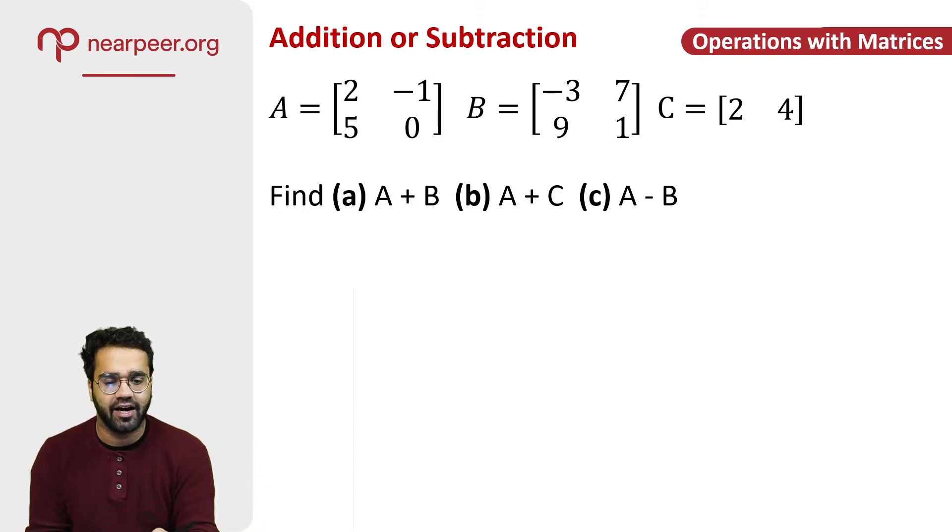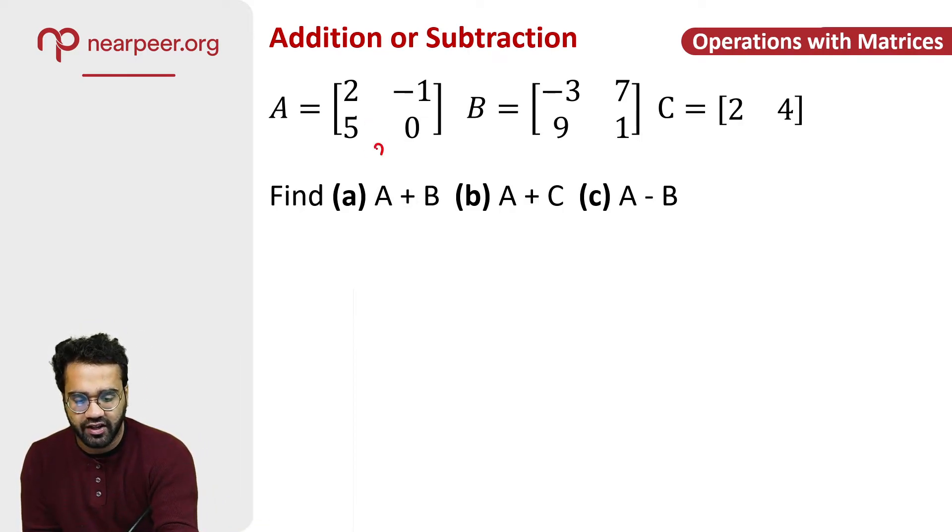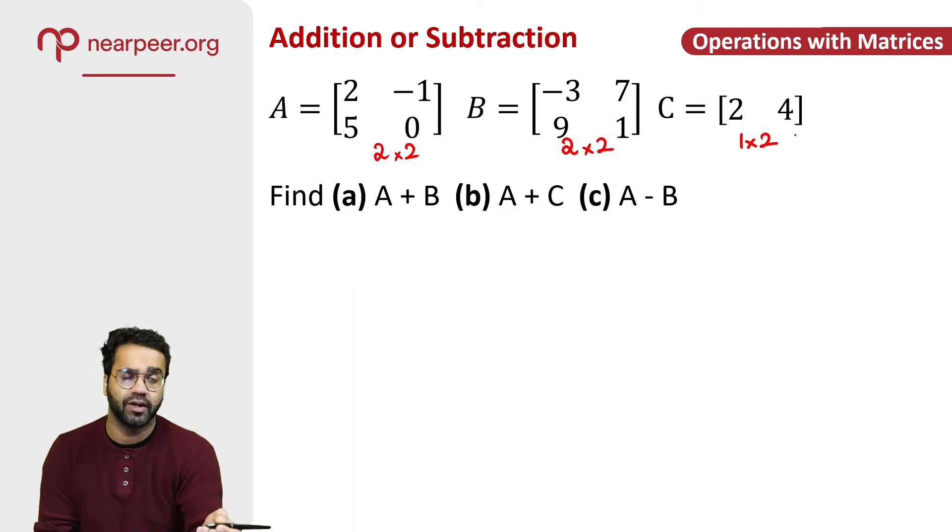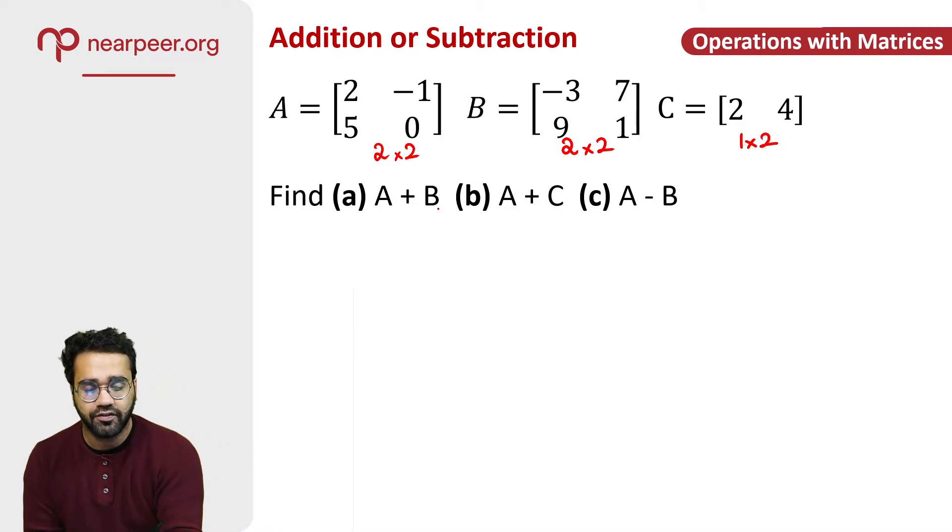Now let's say that I have three matrices here A, B, and C. So the order of matrix A is 2 by 2 because 2 rows and 2 columns. B also has 2 by 2 and C is 1 by 2 because 1 row and 2 columns. And the first thing I want to do is find A plus B.